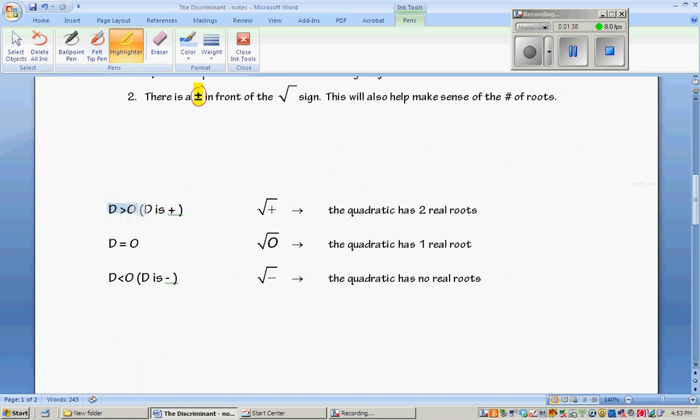If the discriminant is greater than zero, meaning the discriminant is positive, the quadratic has two real roots. For example, if you had x equals negative b plus or minus the square root of nine, you're going to have the plus three version of the answer and the minus three version of the answer. That's why it has two real roots.